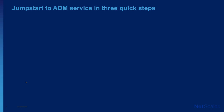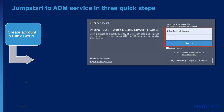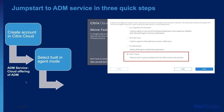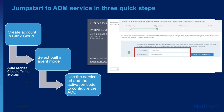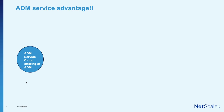Let's talk about how you can jumpstart with the ADM service in three quick steps. First, you create a Citrix Cloud account. Then you select the ADM service offering. On the next page, you select the inbuilt agent mode, which eliminates the need for an on-prem agent. Then copy the service URL and activation code and configure your ADC to be managed by the ADM service.